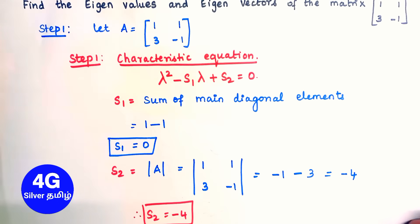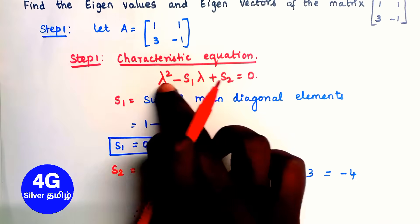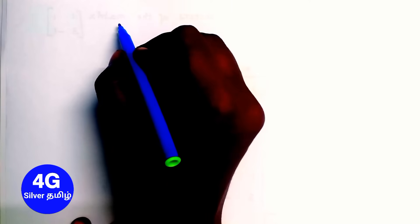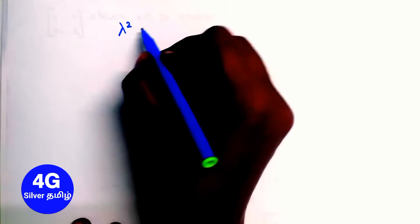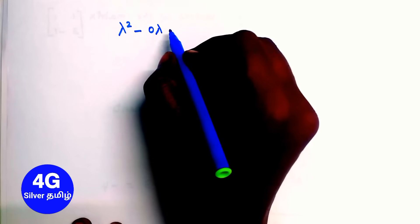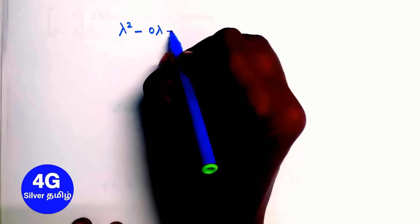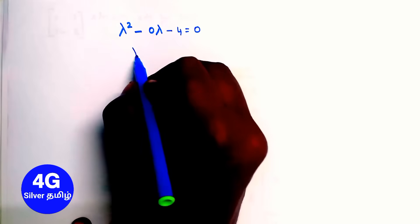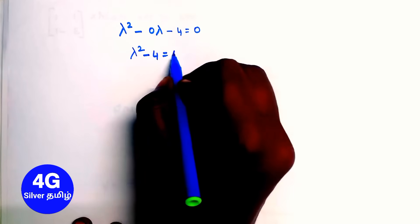Now we substitute S1 and S2 into the characteristic equation. Lambda squared minus (0)lambda plus (-4) equals 0. Since 0 times anything is 0, this simplifies to lambda squared minus 4 equals 0.